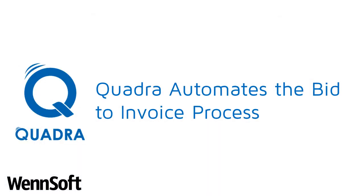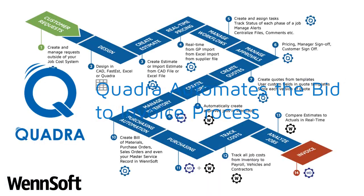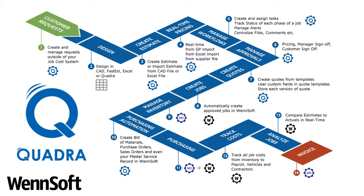Quadrant automates that bid-to-invoice process, and everything starts with the customer request, which will then translate into a design for us. If we have time and all the correct information, we can get very specific with the estimates and quotes that we're producing. Oftentimes we don't have all the information, so we rely on templates and the information available to produce a high-level quote.